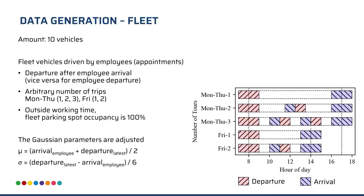For the fleet, we also assume 10 vehicles driven by employees, meaning they can only depart after the employees have arrived, and their latest arrival is before the employee's departure. Every red-hatched box in the graph shows the departure of a vehicle, and the blue boxes show arrivals. We can have one to three tours between Monday and Thursday, and up to two tours on Friday.